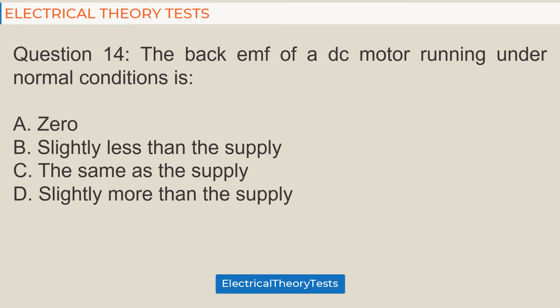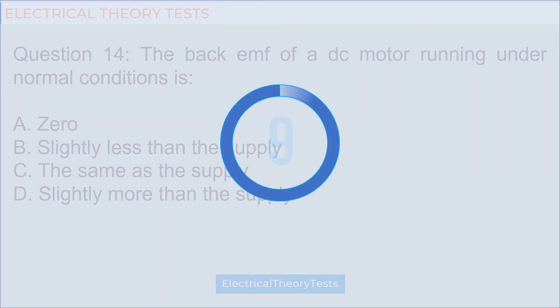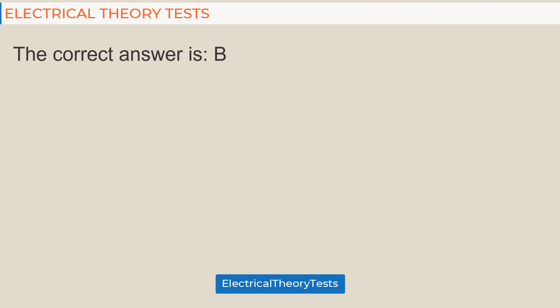Question 14: The back EMF of a DC motor running under normal conditions is: A: Zero, B: Slightly less than the supply, C: The same as the supply, D: Slightly more than the supply. The correct answer is B.